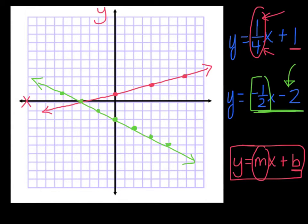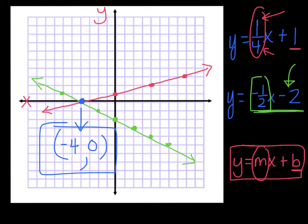We just graphed this system of equations and found that point of intersection, which is called the solution. I'm going to write the solution as an ordered pair. It's always x, y. The point looks like I went over four, so it's negative four, up zero. The solution to that system of equations is negative four comma zero.